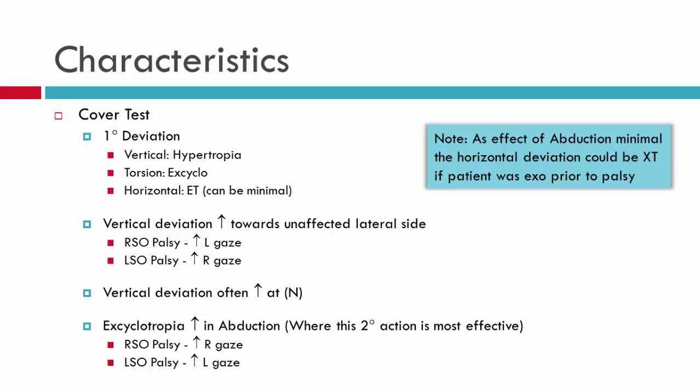Let's start off with the cover test. From the modules on clinical investigations of a patient with incomitant strabismus, you're aware that the deviation will be opposite to the action of the extraocular muscle that's been palsied. So the primary deviation we're expecting will be vertical — we'll have a hypertropia. There may also be an esotropia, and in terms of torsion we'll have an excyclotropia. The vertical deviation will increase towards the unaffected lateral side.